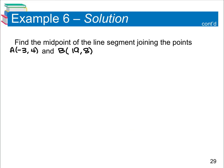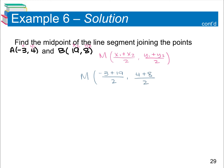For the next example, given ordered pairs A = (−3, 4) and B = (19, 8), find the midpoint. Using A as x₁, y₁ and B as x₂, y₂: (−3 + 19)/2 and (4 + 8)/2. Negative 3 + 19 gives 16/2, and 4 + 8 gives 12/2. Both simplify to give (8, 6).